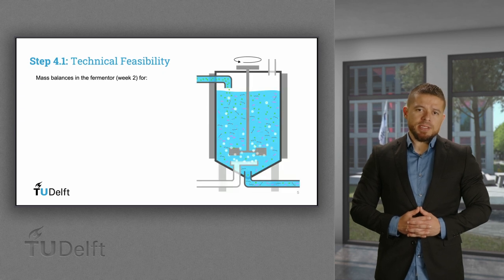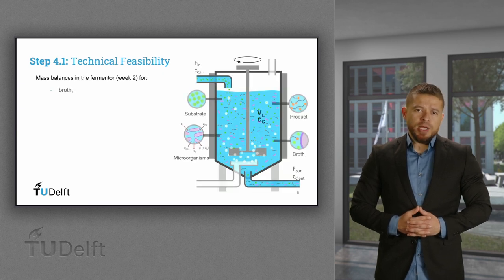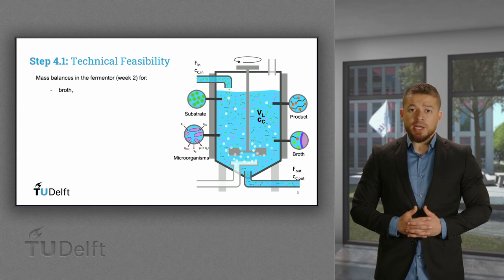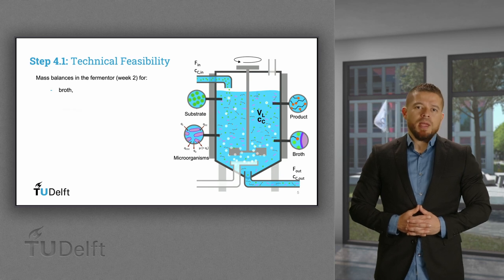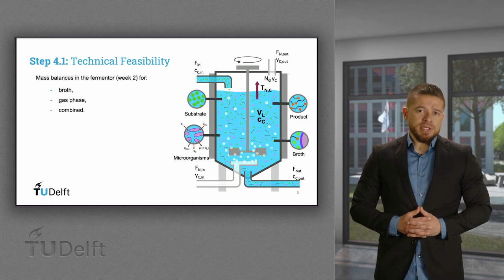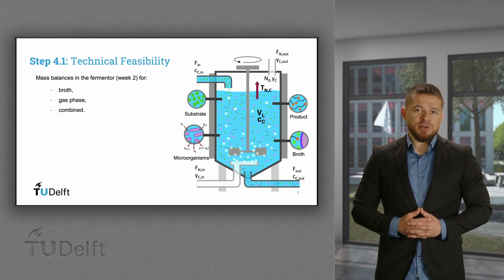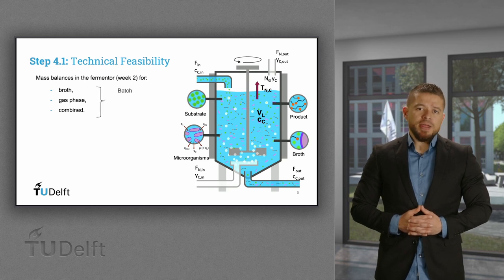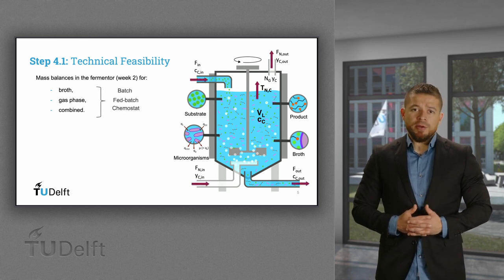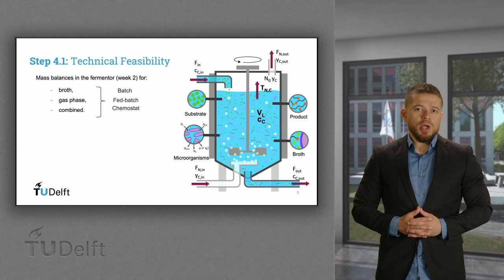Let's take a look at the fermentation unit. We can do mass balances in the broth, where there is biomass, substrates including dissolved oxygen, products, and water. We can do the same around the gas phase. However, only the combined balances can truly describe the mass flows going through the fermentation unit. Additionally, the operation mode — either batch, fed-batch, or continuous — will also affect the mass balances.